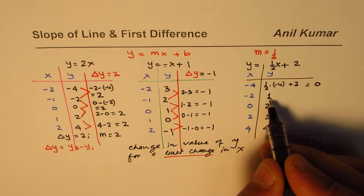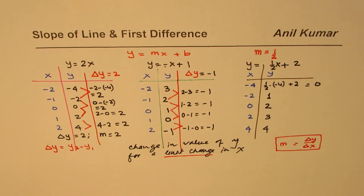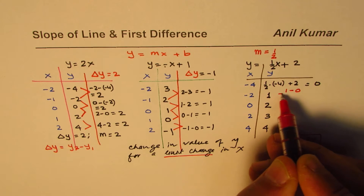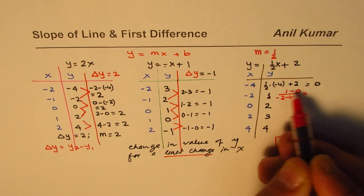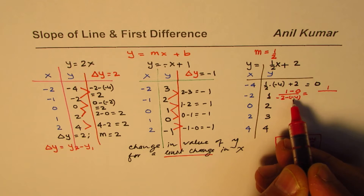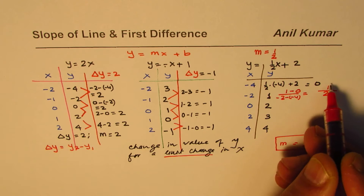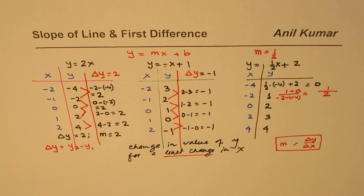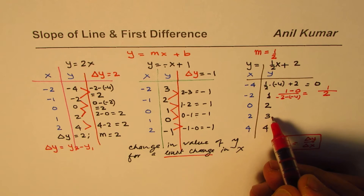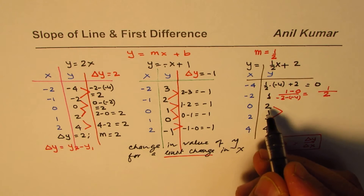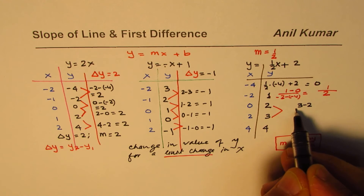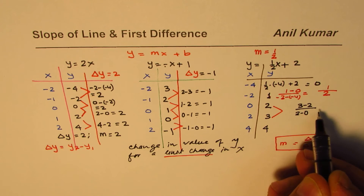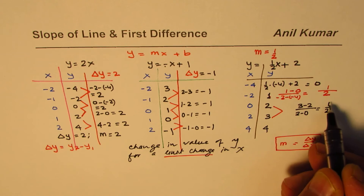For y = ½x + 2, taking the first pair: change in y is 1 - 0 = 1, change in x is -2 - (-4) = 2, so Δy/Δx = 1/2. Taking the second pair: change in y is 3 - 2 = 1, change in x is 2 - 0 = 2, giving 1/2 again. So the first difference equals the slope of ½.